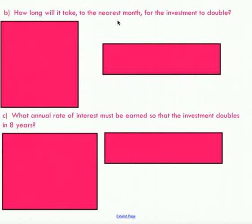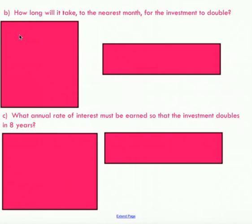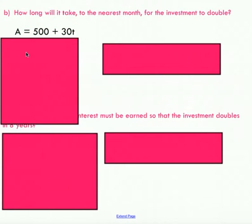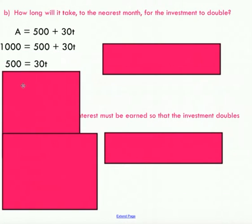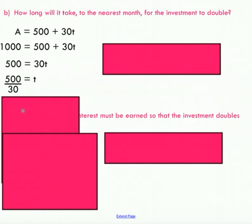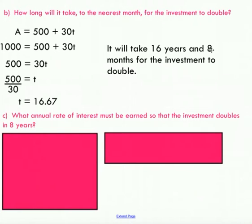We're also asked: how long will it take, to the nearest month, for his investment to double? His original investment was $500, so to double it we need to end up with $1,000. We substitute $1,000 into the amount in our linear model and solve for T. Bringing $500 to the other side and dividing both sides by 30 gives a time of 16.67 — that's 16 years and 8 months, since 0.67 of a year is approximately 8 months.